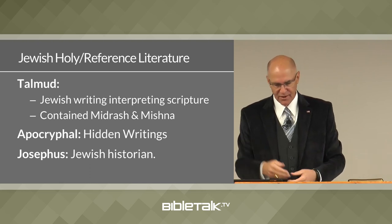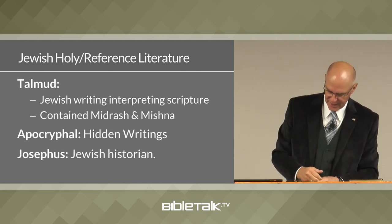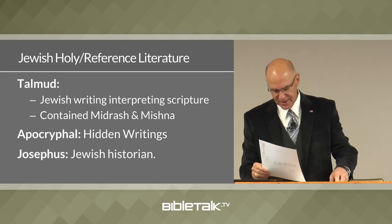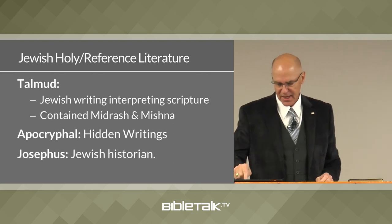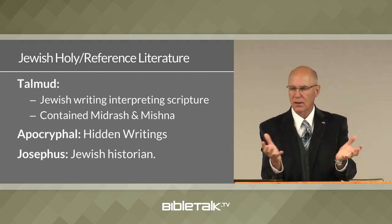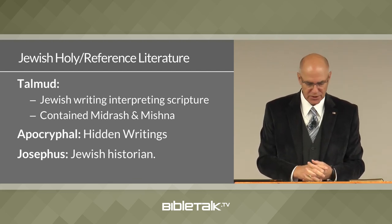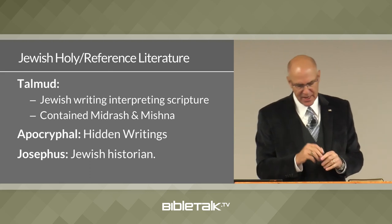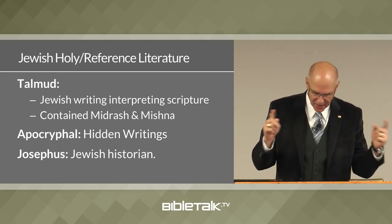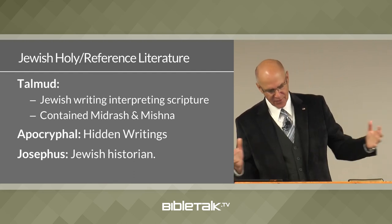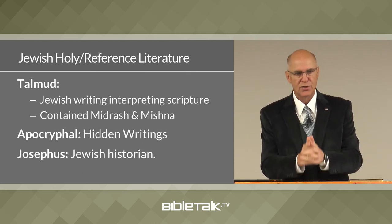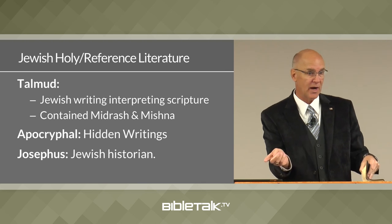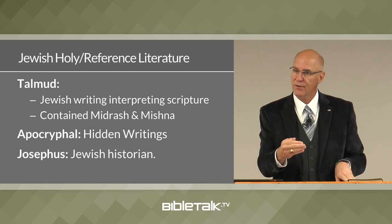When we read the Old Testament, we're reading the same books the Jews read at the time — the exact same books that Jesus and the apostles read and taught from. Next week we'll show how to divide the entire Old Testament into ten periods, look at the New Testament books and how they were put together, and what criterion was used to decide which books fit into the New Testament canon — how they decided which books were inspired and which were not.